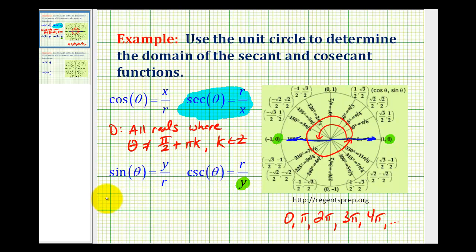So the domain of the cosecant function would be all reals where theta does not equal any multiple of pi, or pi times k, again where k is some integer.